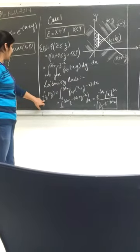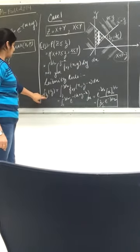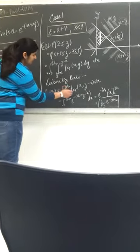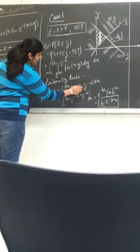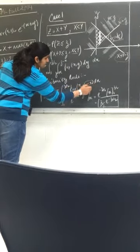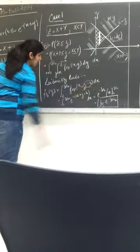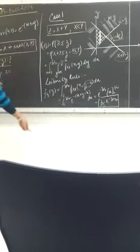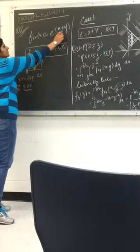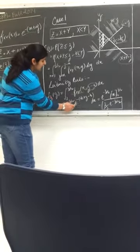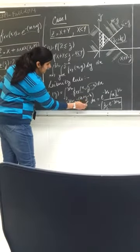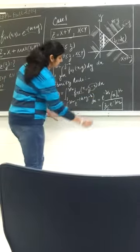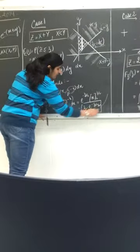Using the Leibniz rule, we find the probability density function f_Z of z, integrating from 0 to z/2. We put x and z minus x into f(x,y), which is e raised to the power minus x plus y. So we evaluate e raised to the power minus x plus (z minus x), giving e raised to the power minus z. After integrating, we get the result for Case 1: (z/2) e raised to the power minus z.